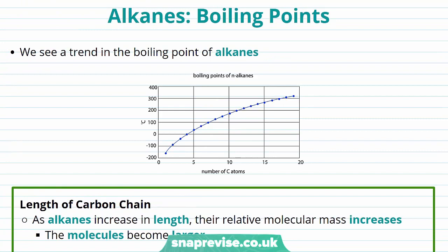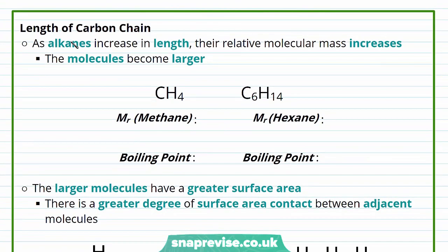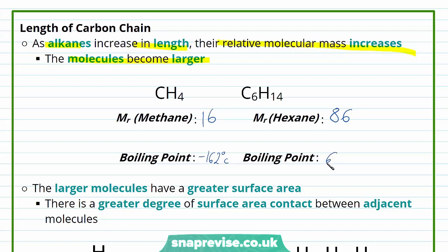Let's have a look now at the trends in the boiling points of our alkanes. As the number of carbon atoms increases, the boiling point increases. As the alkanes increase in length, their relative molecular mass increases too — the molecules become larger. If we compare methane and hexane: methane has a molecular mass of 16, whereas hexane, which is much larger, has a relative molecular mass of 86. The boiling point of methane is minus 162 degrees Celsius, and that of hexane is 69 degrees Celsius. So hexane is larger and has a higher boiling point.